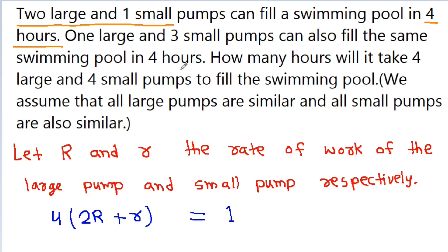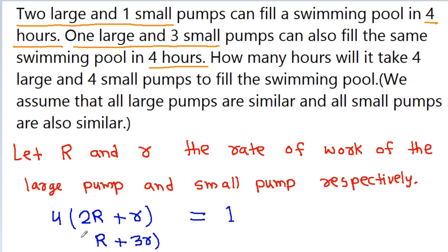Now, it is given that 1 large and 3 small pumps can fill the same swimming pool in 4 hours. So here we have 1 large and 3 small pumps, so it will be capital R plus 3 times small r, and the time taken is again 4 hours. So we multiply it by 4, that is equal to 1.